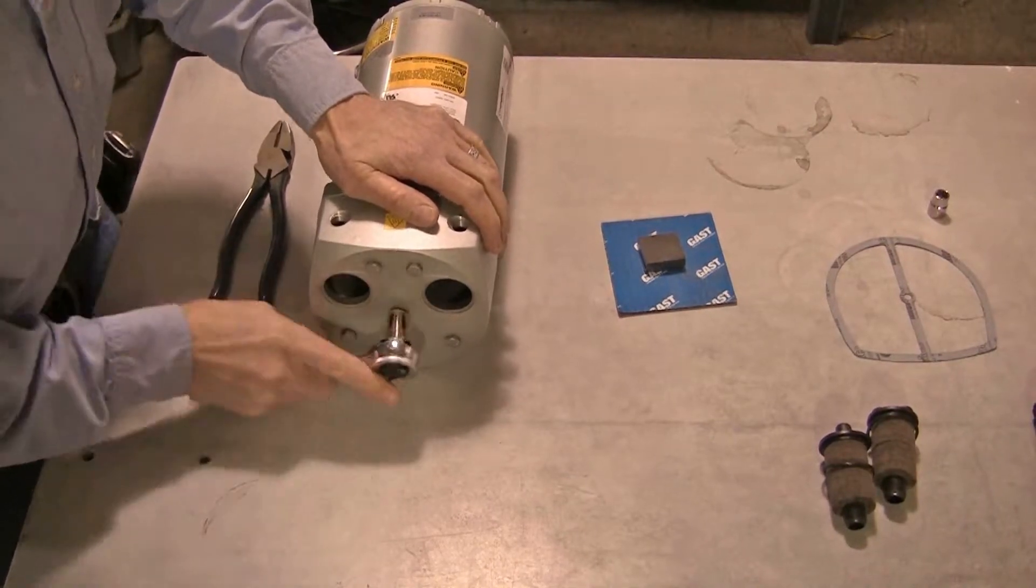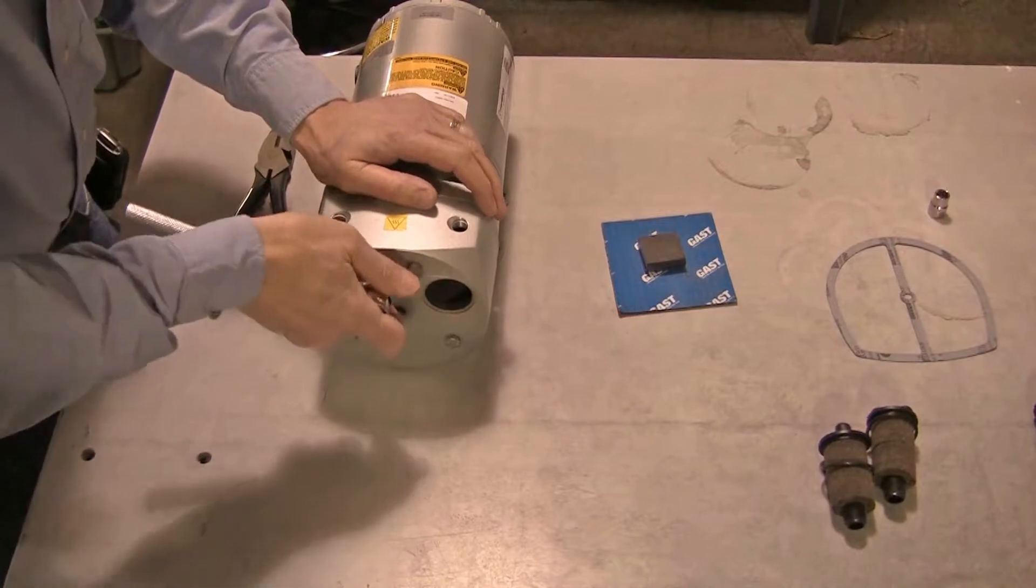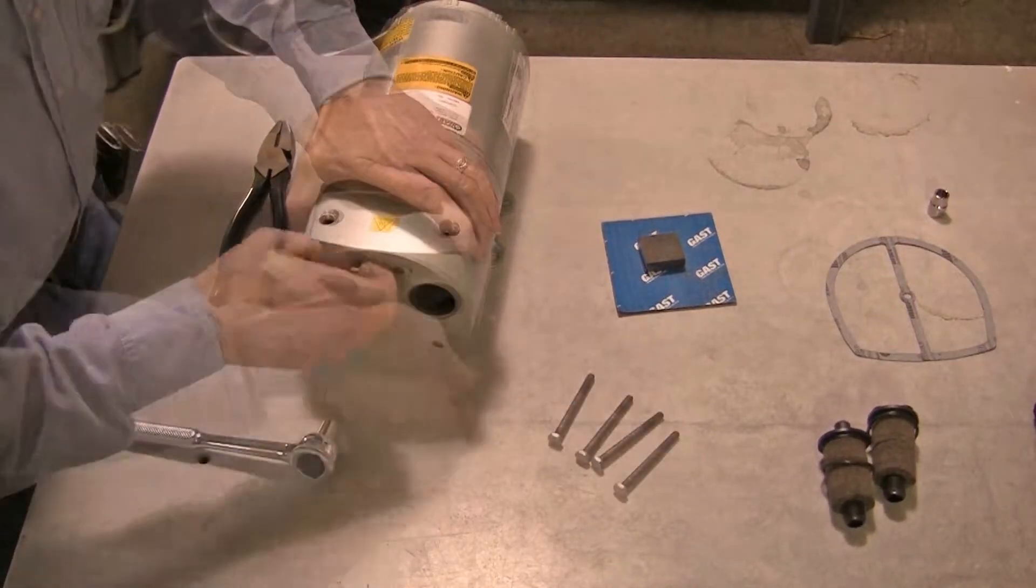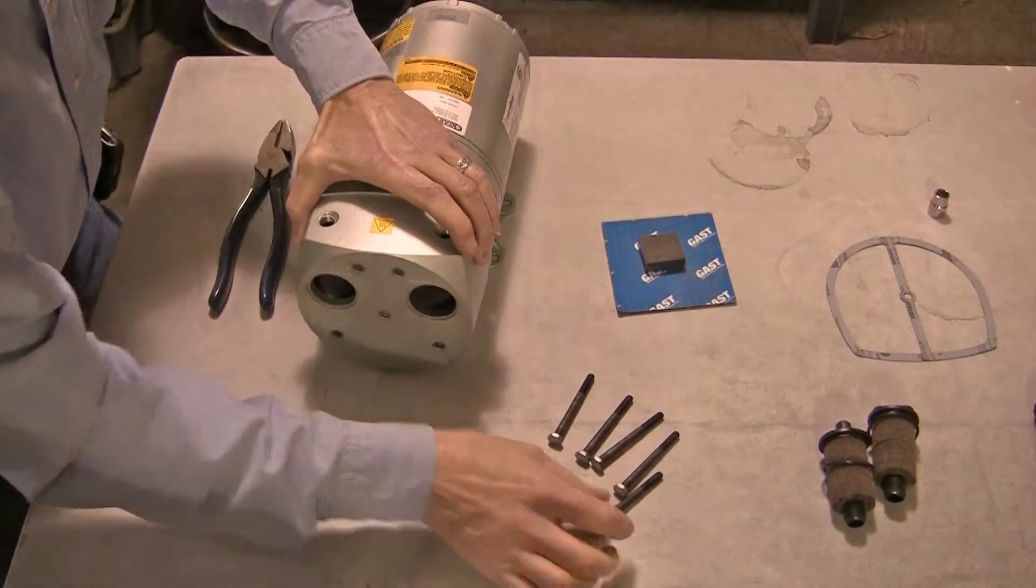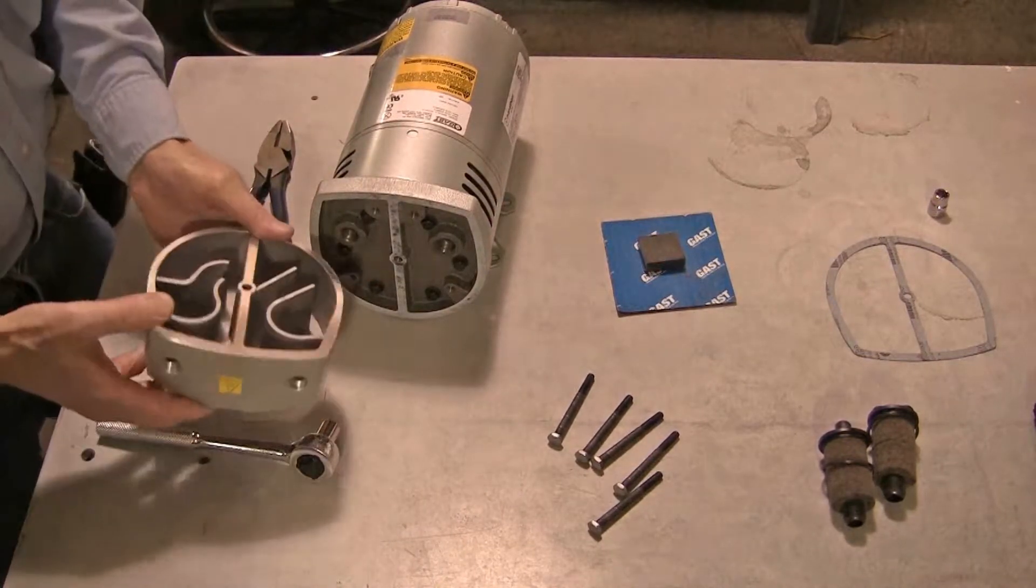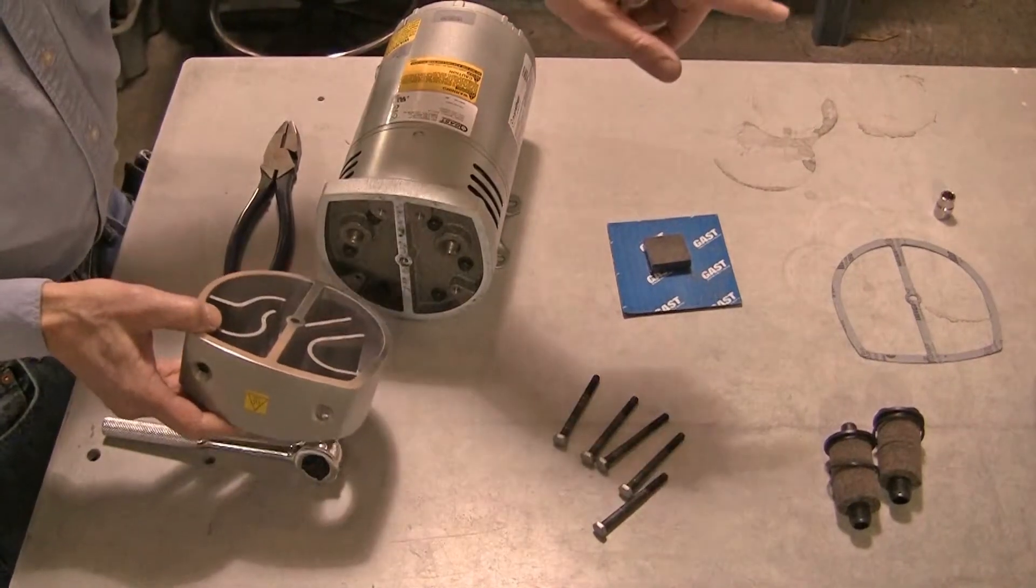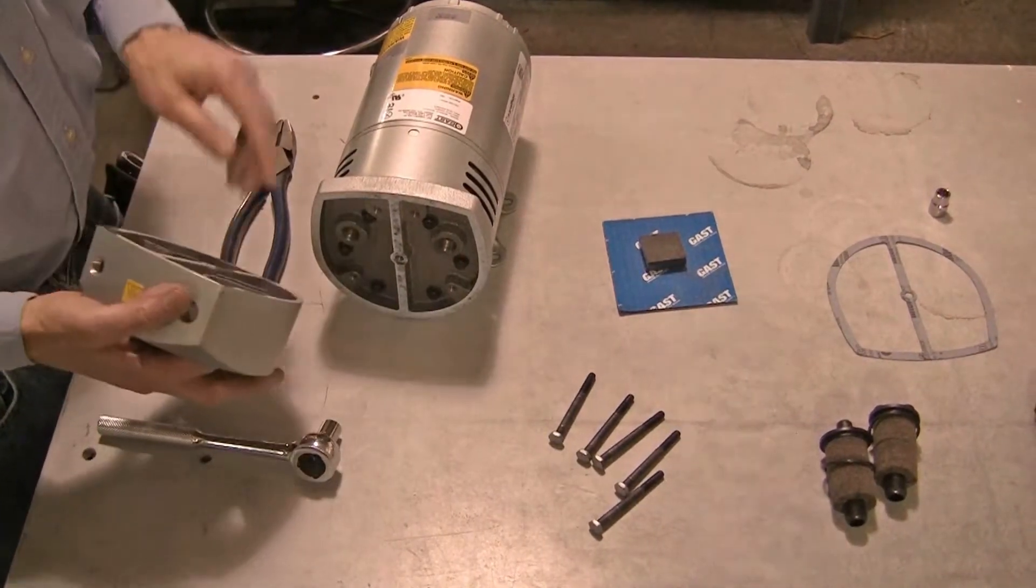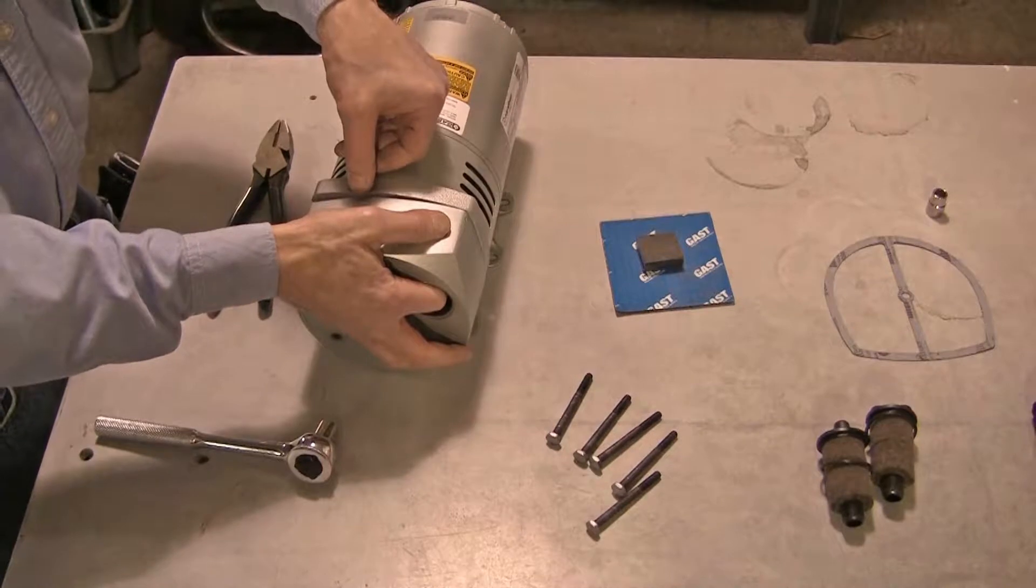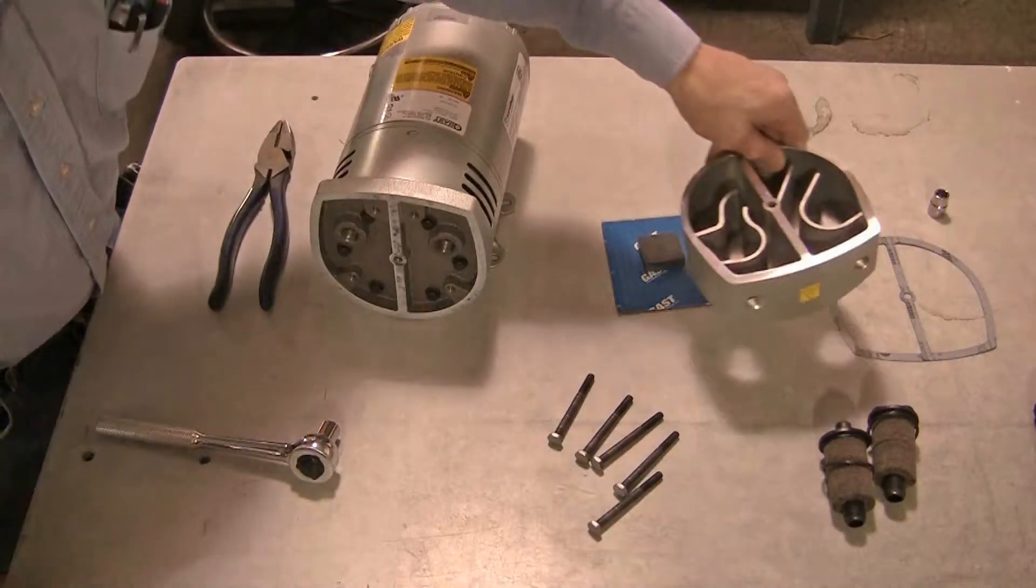Remove the 5 bolts from the muffler box using the ratchet and 7/16th inch socket. Remove the muffler box. If needed, use the rubber hammer to tap on the muffler box to aid removal. Never pry the box off by placing any object in the seam between the muffler box and the endplate.